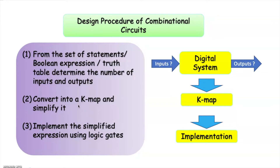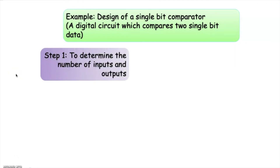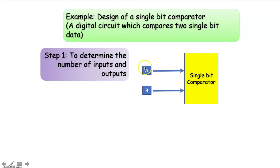Now as an example, let us try to design a single-bit comparator. The first step of the design is to determine the number of inputs and outputs. Let us draw a box which represents a single-bit comparator. A single-bit comparator is a digital circuit which compares two single-bit data. So it is obvious that there must be two inputs — let us name them A and B, where A is a single bit and B is also a single bit.